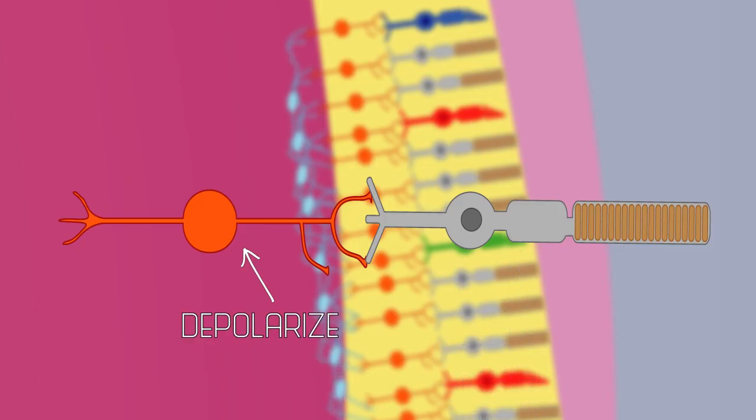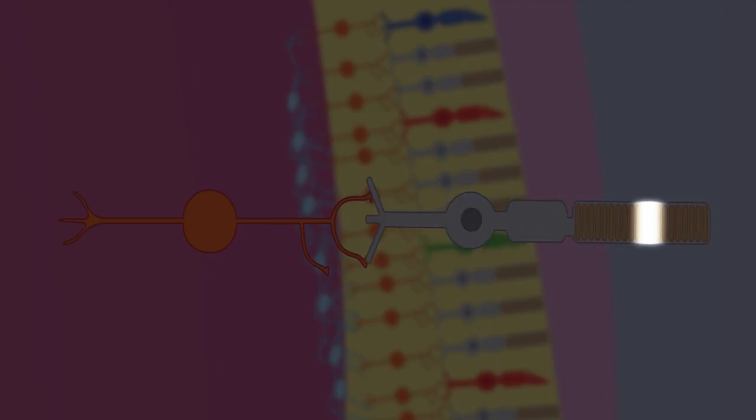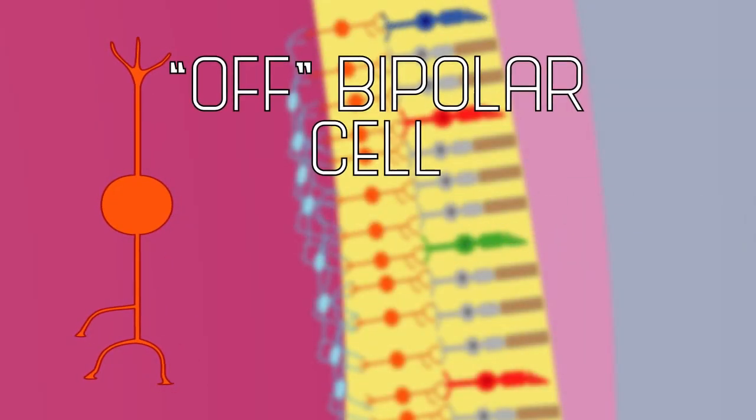This means that they depolarize, or become more positive, when there is no light, because the photoreceptor is firing, which makes the bipolar cell fire. These are called off-bipolar cells, because they're off when the light is on.